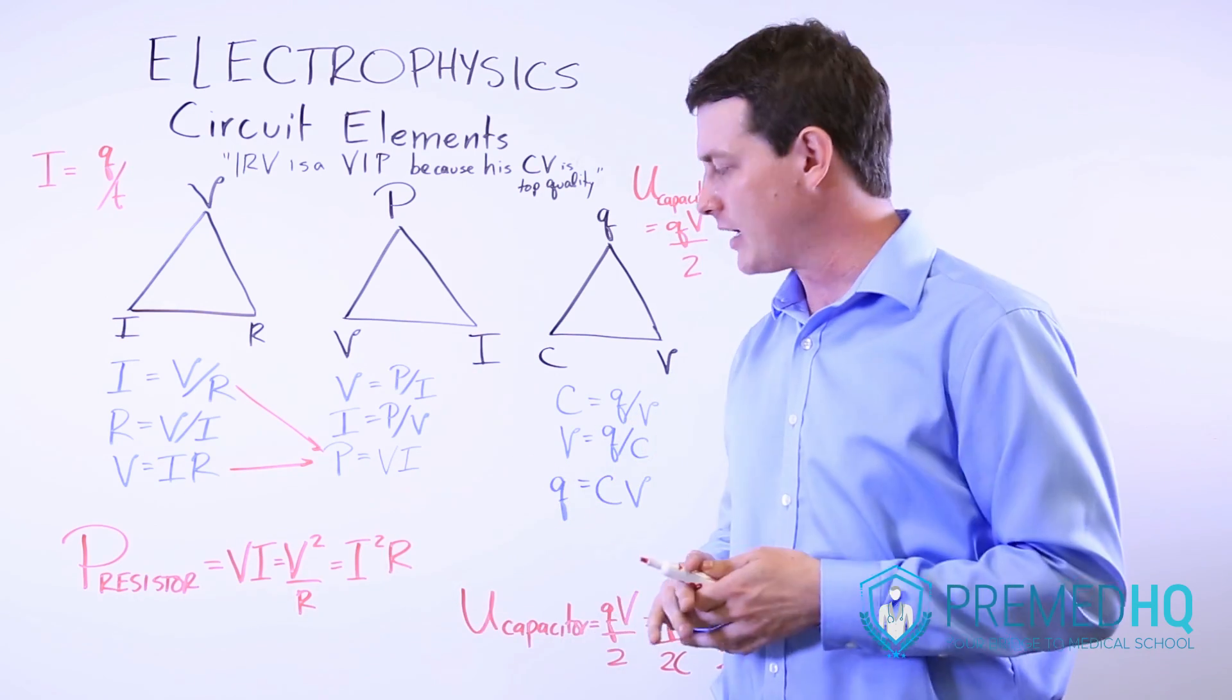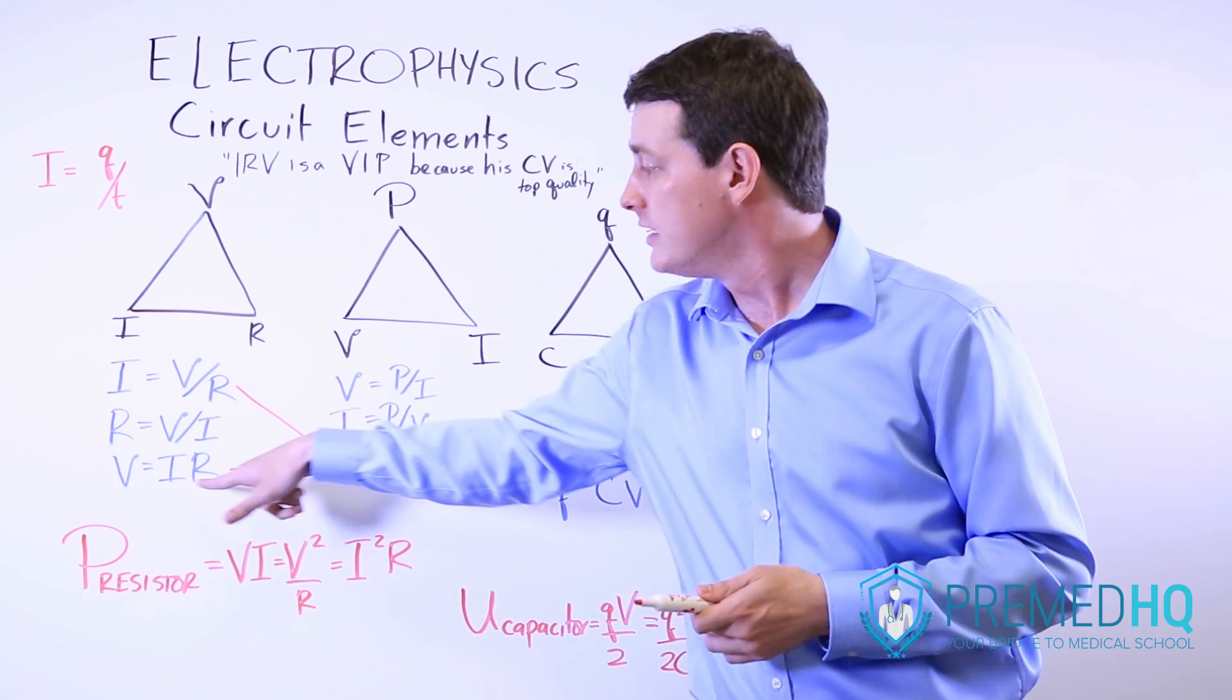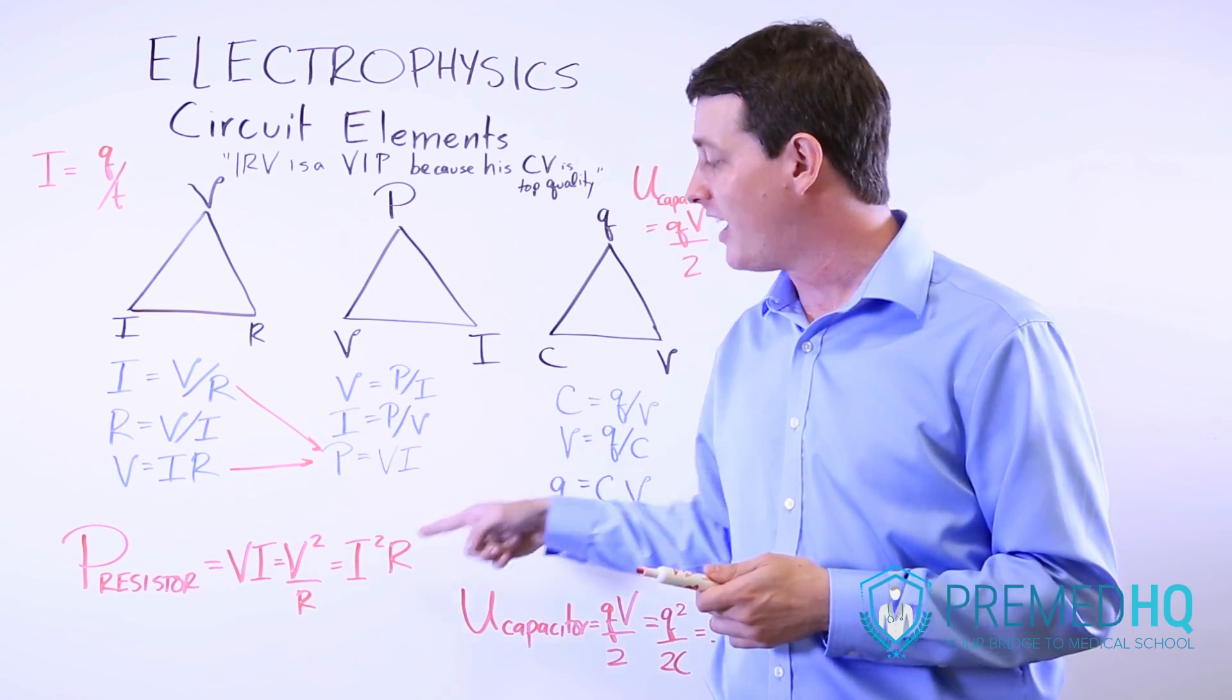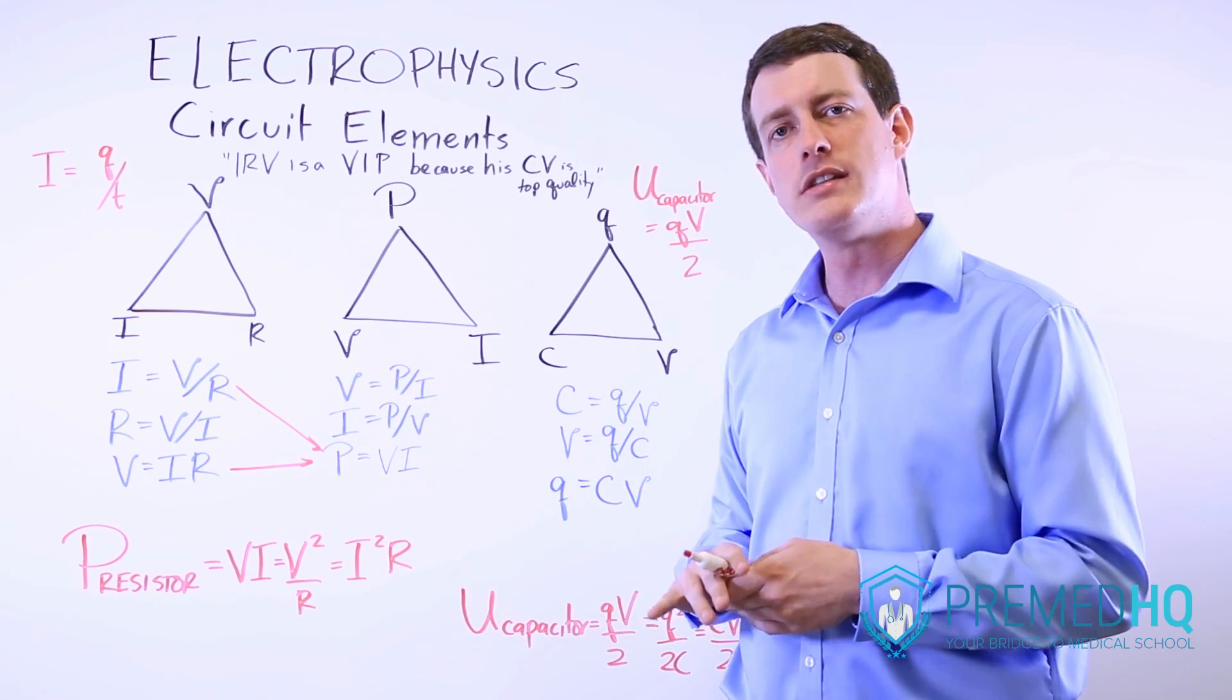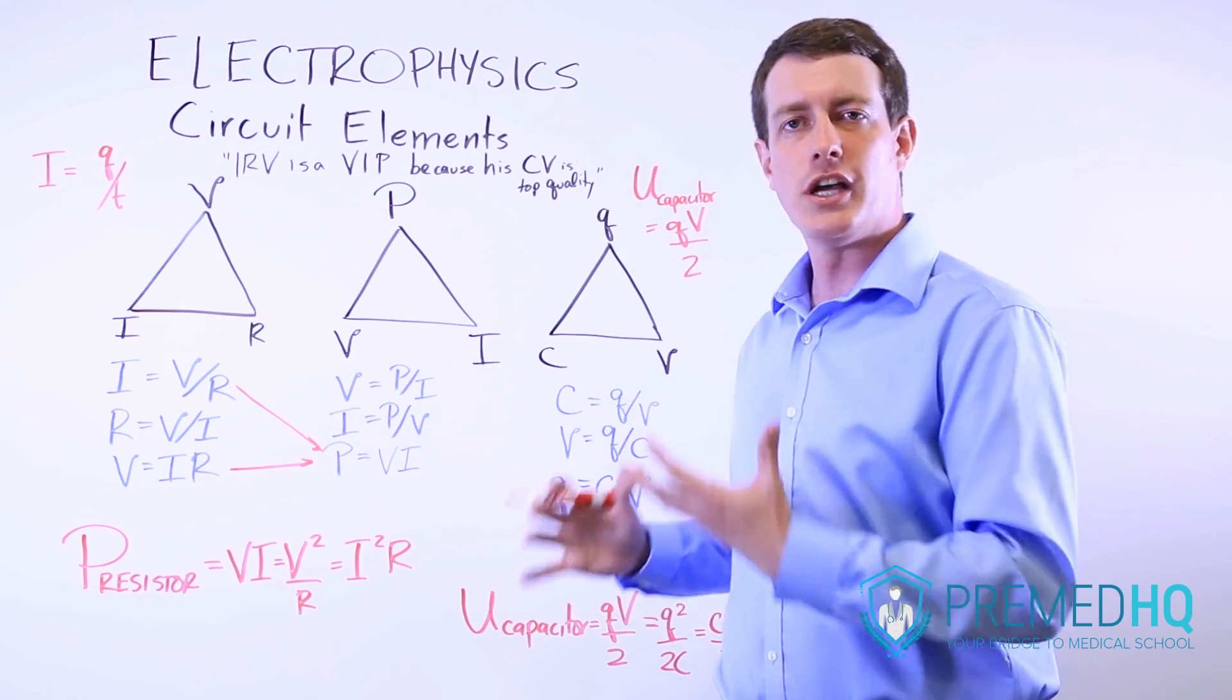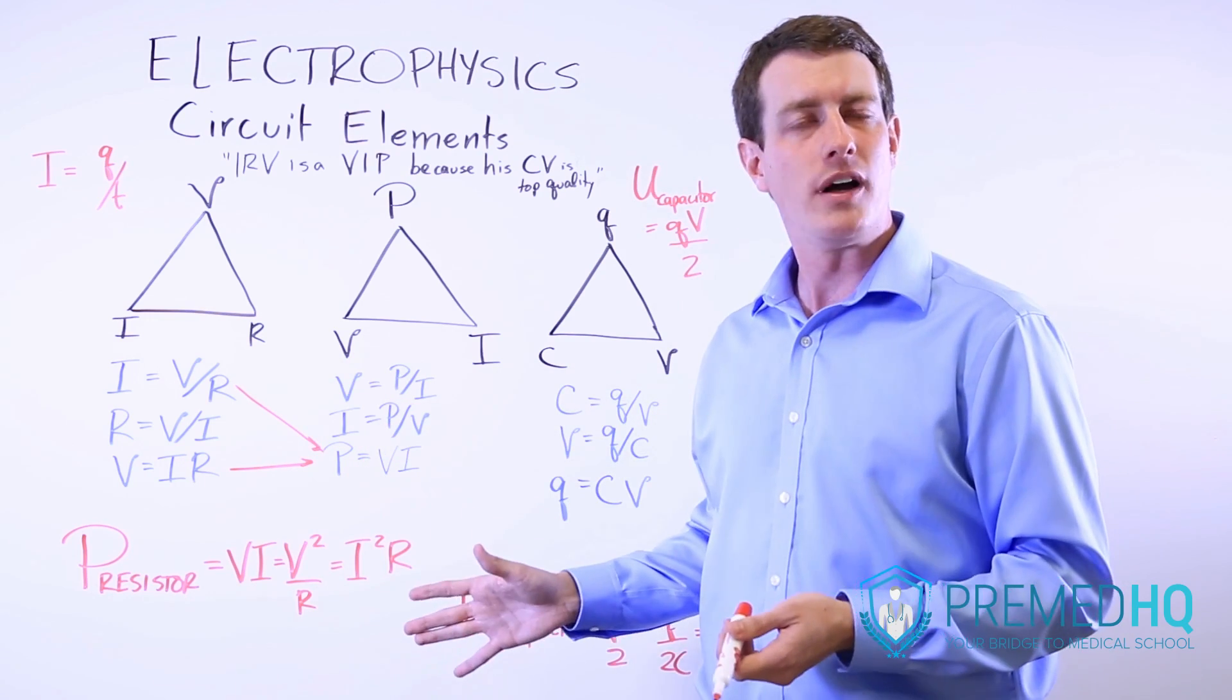That's another way of representing power. And if we want, we can also substitute instead of V, we will substitute IR. And so there we'll have IR times I, or I squared R. And those are all the different ways that you could be able to derive the power generated by a resistor when given any of these individual quantities.